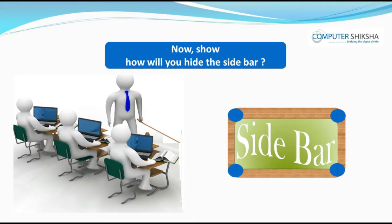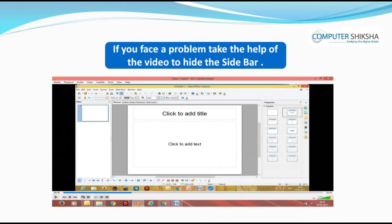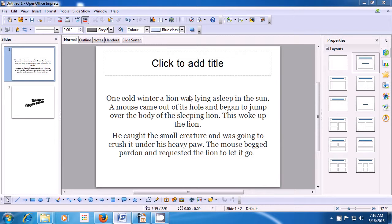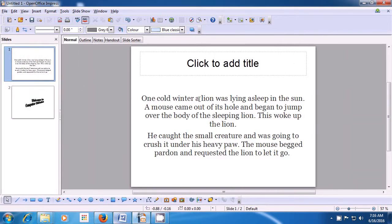Now, show how you will hide the sidebar. With this video, we will see how we can hide the sidebar or the slide layout. Take your pointer to the View menu in the menu bar, click on it, and then click on the Sidebar option. As soon as you click there, you will notice that the slide layout on the right side of your slide gets hidden. This is how you can hide the sidebar.